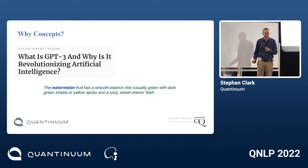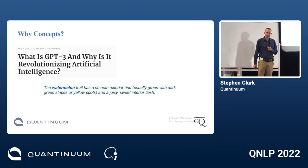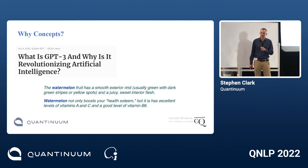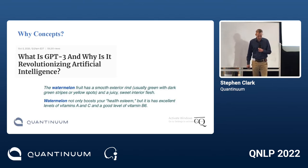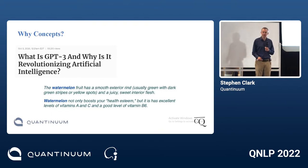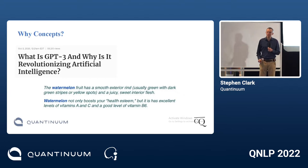GPT-3 has essentially been trained on the whole internet and has read Wikipedia. So if I gave it a prompt like 'tell me more about watermelons,' I wouldn't be surprised if it produced another sentence about health, vitamins, and so on. We can ask again: does GPT-3 have a concept of what a watermelon is? There's some evidence from large-scale language models that they do something like conceptual reasoning.